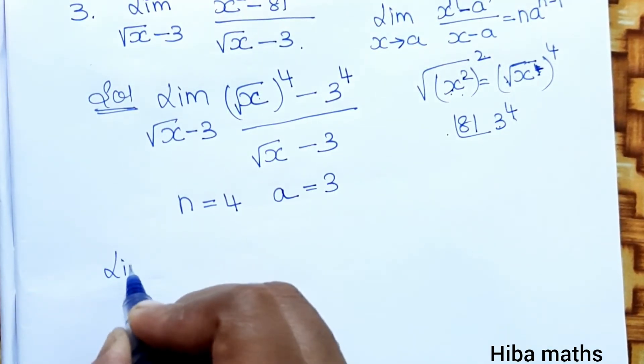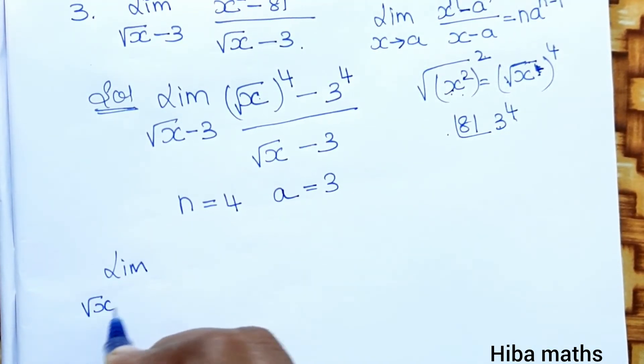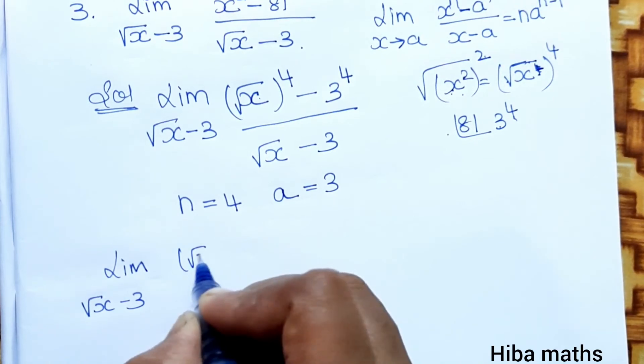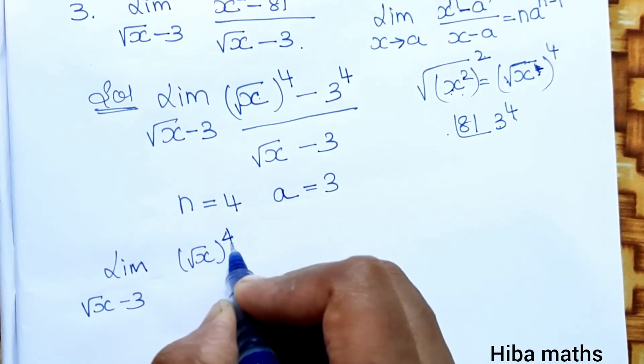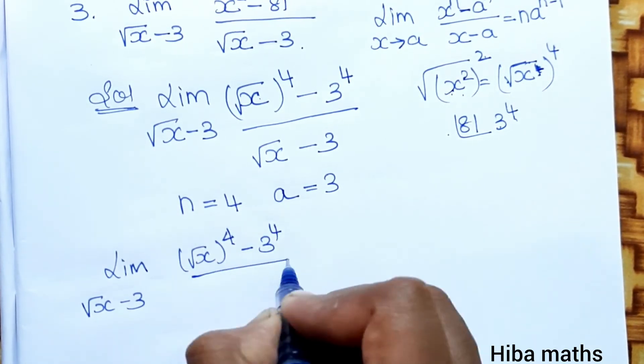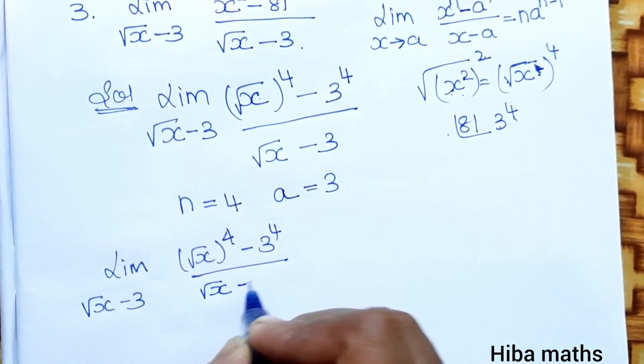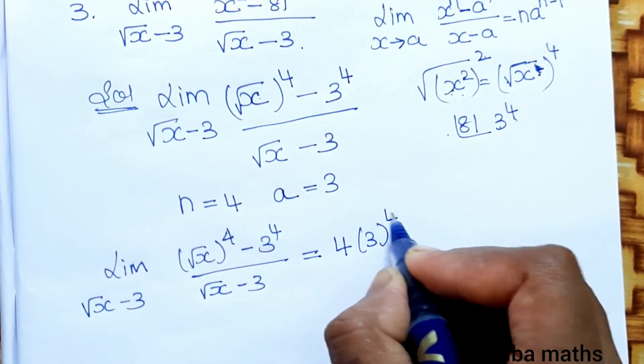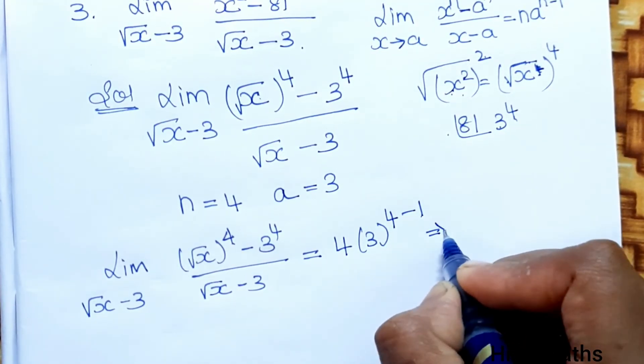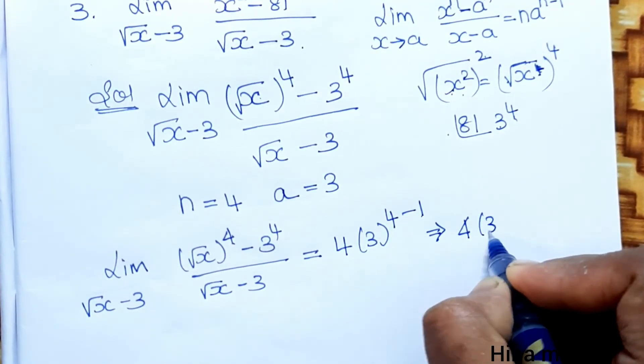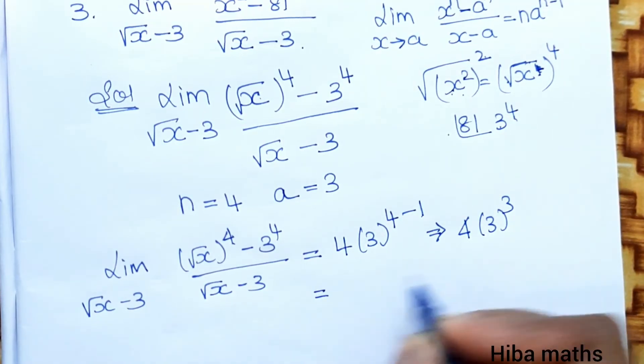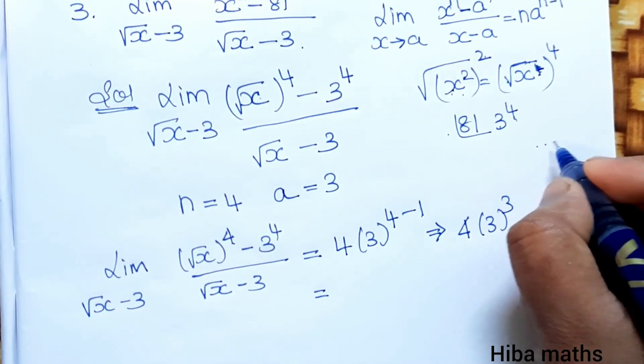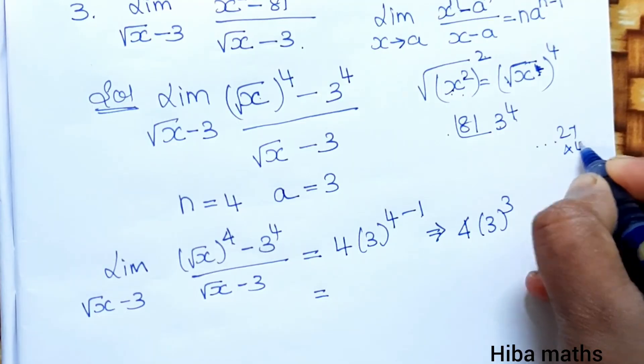Limit root x minus 3: root x power 4 minus 3 power 4 divided by root x minus 3 is equal to n into a power n minus 1. That is 4 into 3 power 3. 3 power 3: 3 threes are 9, 9 threes are 27, into 4.